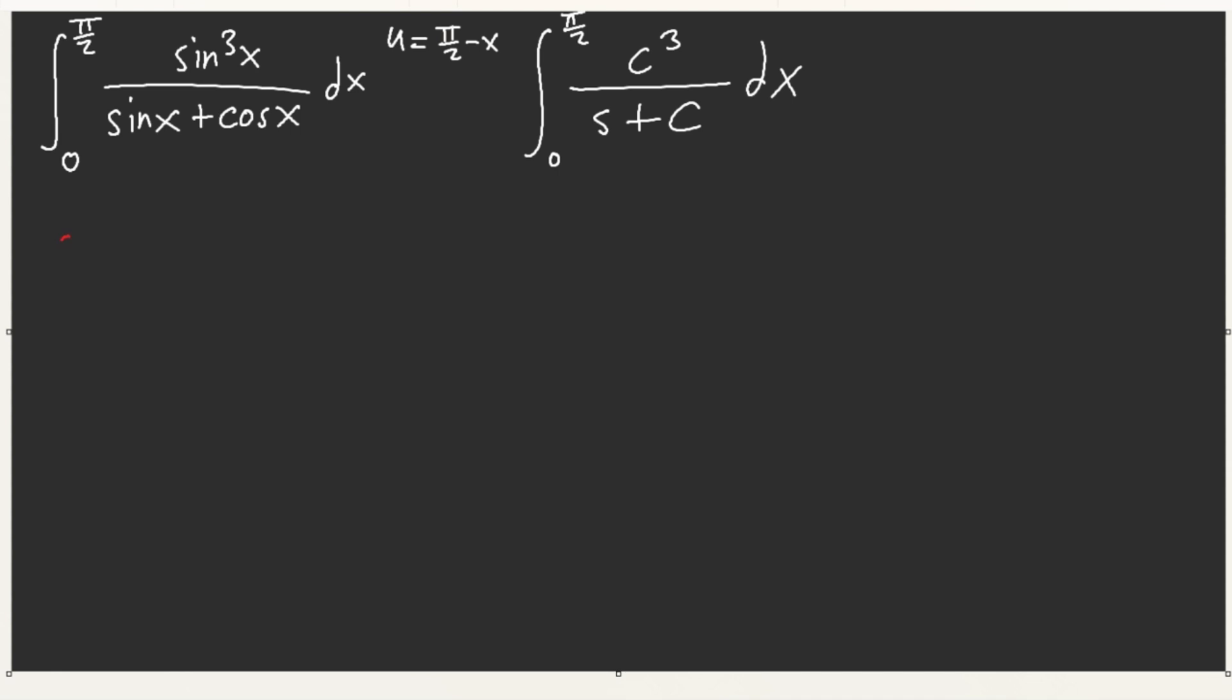we have sine cube, cosine cube. When we do 2I, add two integrals, we get sine cube plus cosine cube. And this actually simplifies to sine square minus sine cosine plus cosine square. Aha! Sine square plus cosine square is just 1. So that's very nice.